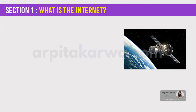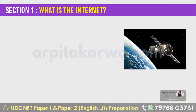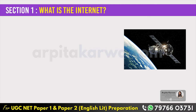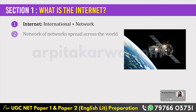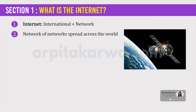According to Webopedia, the internet is a worldwide system of connected networks. Each network consists of millions of computers, servers, routers and printers. The internet is made up of two words: international and network. The internet is basically a network of networks that is spread across the globe. Through the internet, any computer can communicate with any computer in the network.